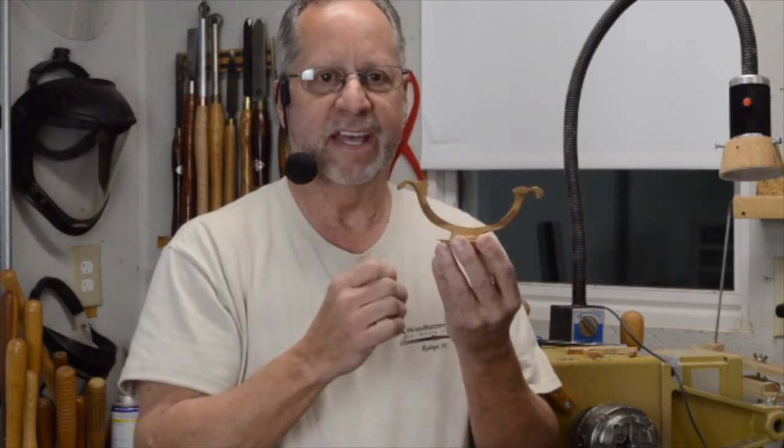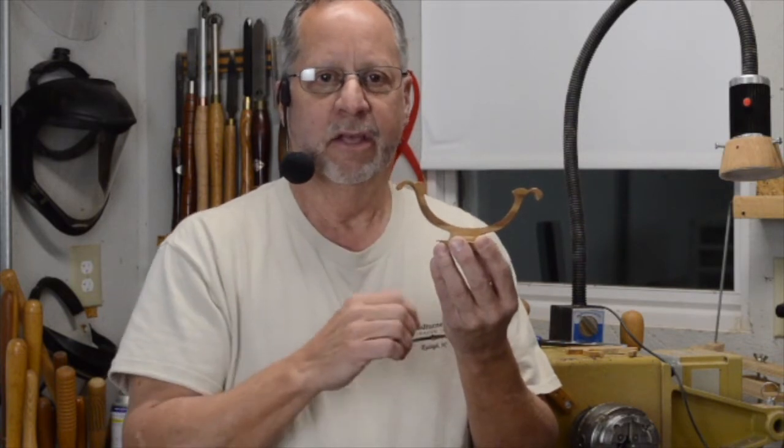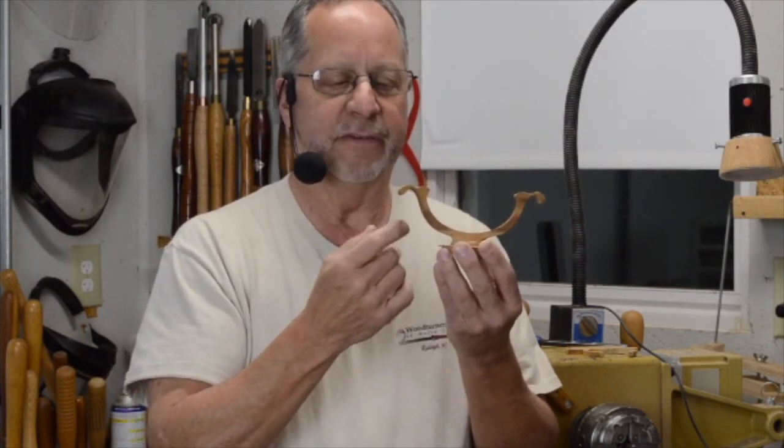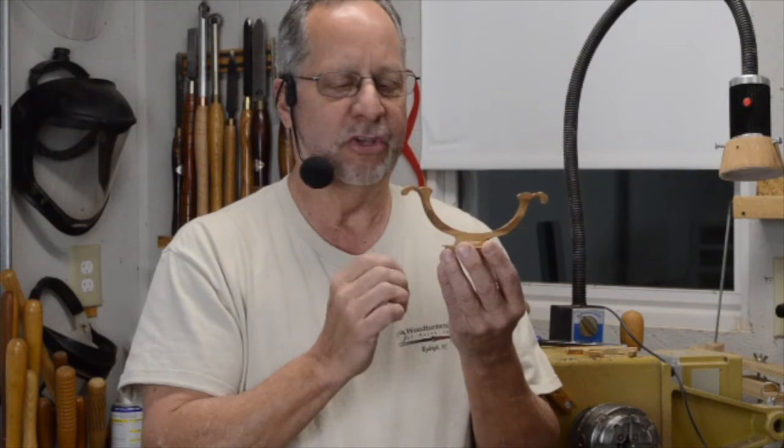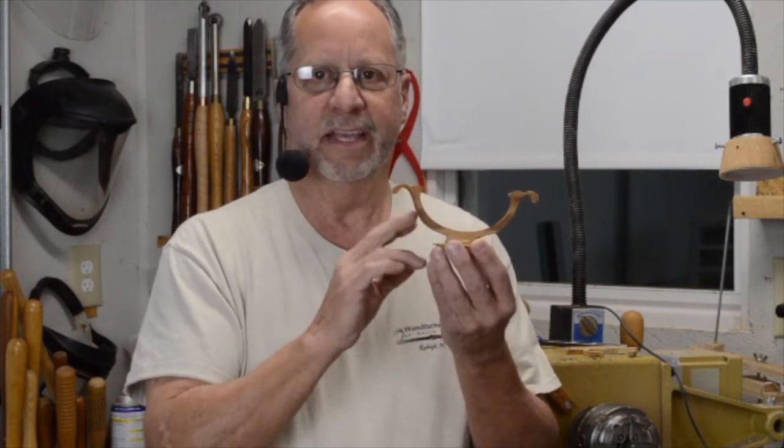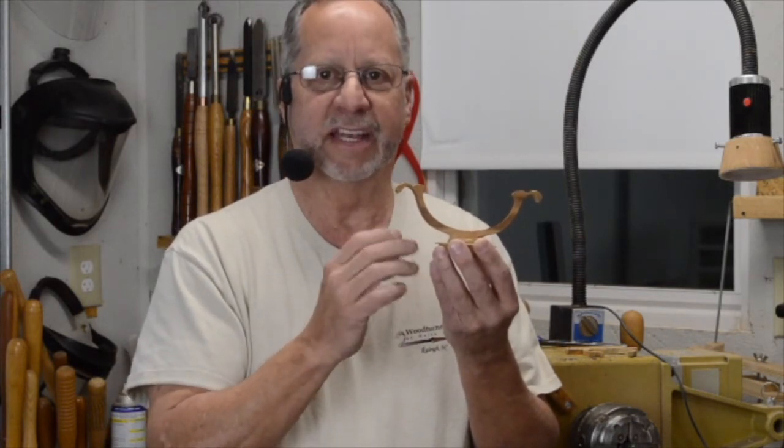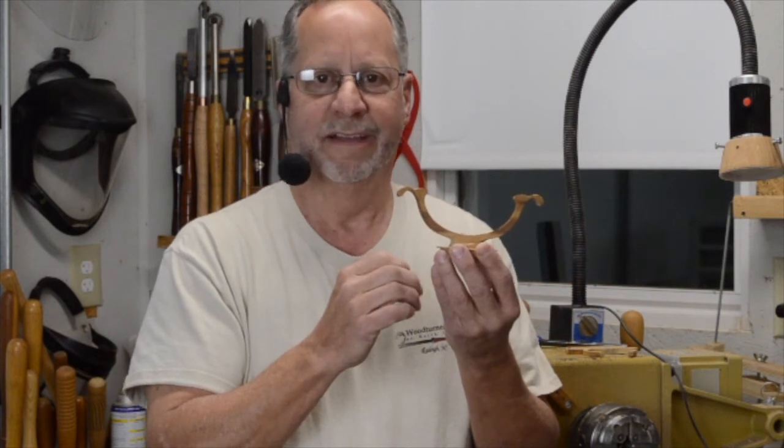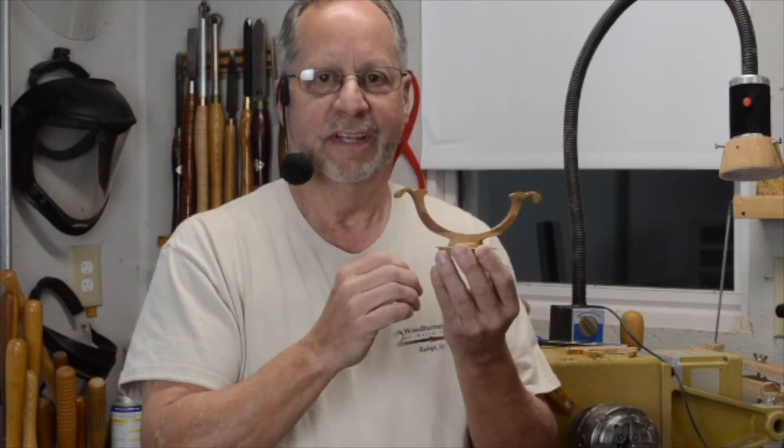And so I want to sand as cleanly as I can. So I've started using a Hunter number 5 to get in there, and I'm going to show you this morning how I do that. It leaves it clean enough that you can usually start sanding with either 180 or 220 if you do it carefully. So let's get on with that.